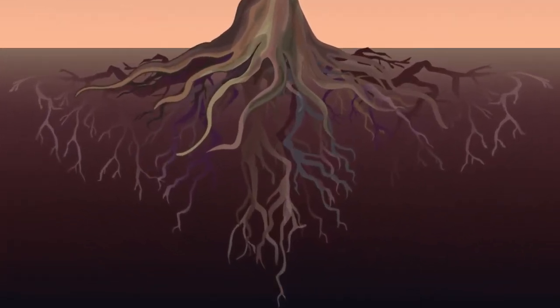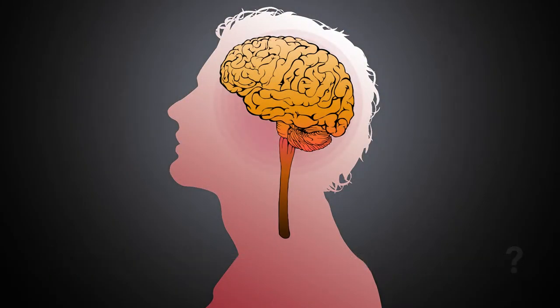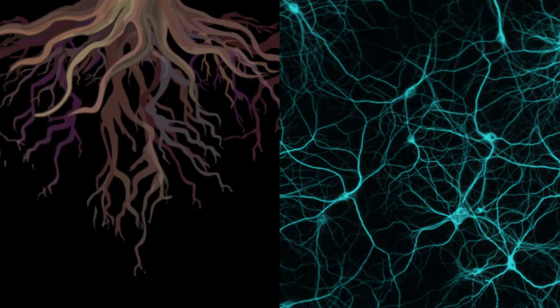We never think about tree roots being the equivalent of the human brain. But in fact, if we look closer, we can see that the root tips have brain-like structures.